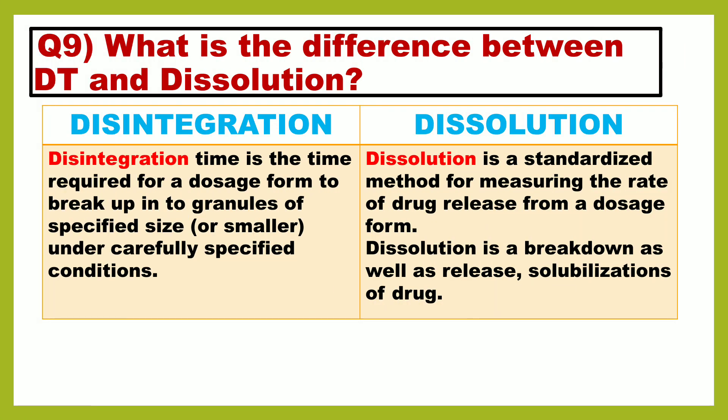Next question is: what is the difference between DT and dissolution? Disintegration time (DT) is the time required for a dosage form to break up into granules of specified size under carefully specified conditions. On the other hand, dissolution is a standardized method for measuring the rate of drug release from a dosage form — it involves breakdown as well as release and solubilization of the drug.